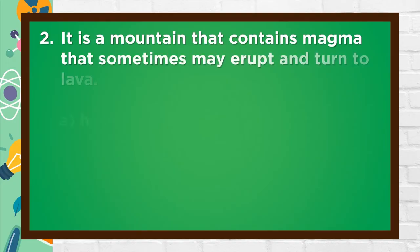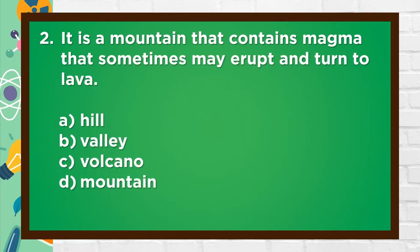Number 2. It is a mountain that contains magma that sometimes may erupt and turn to lava. A. Hill, B. Valley, C. Volcano, D. Mountain. The answer is C. Volcano